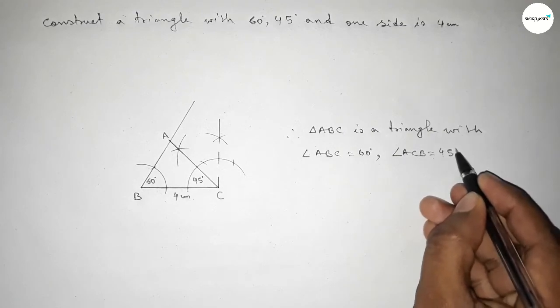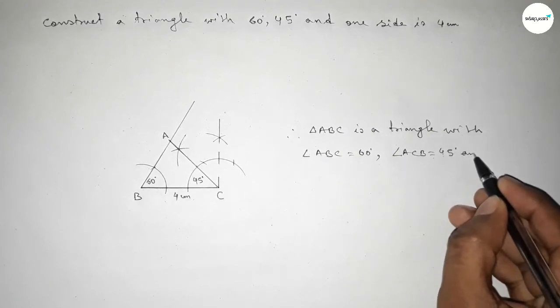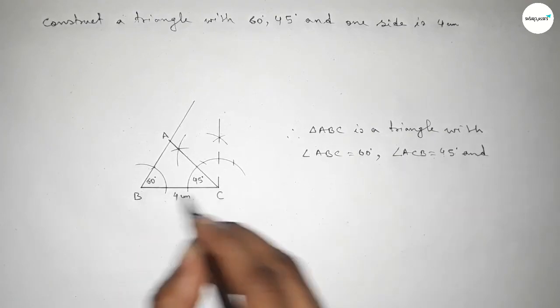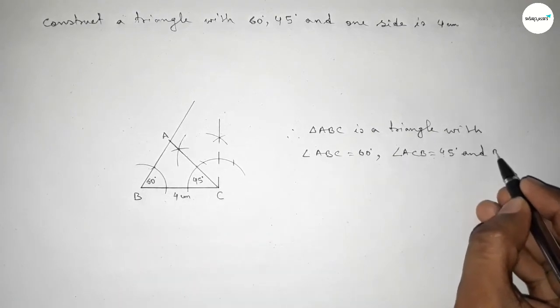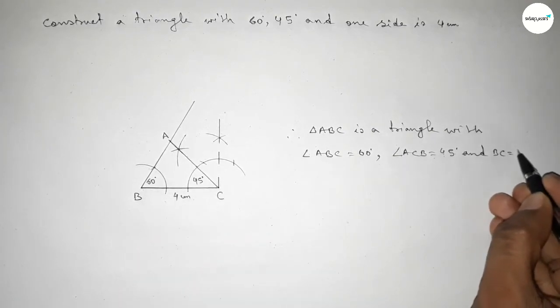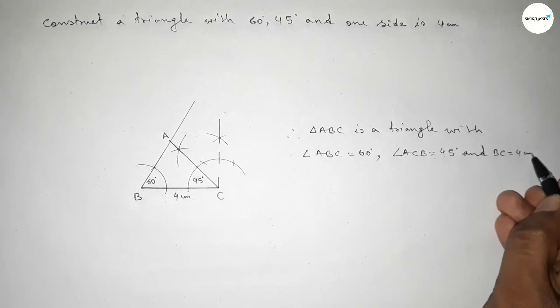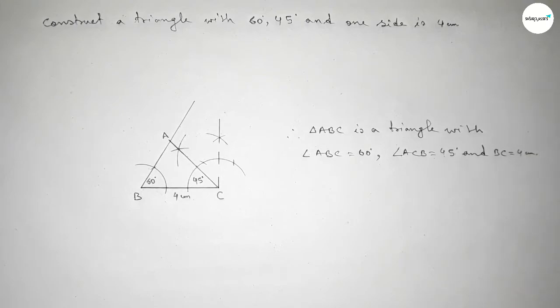And one given side BC equals 4 centimeters. That's all — thanks for watching. If this video is helpful to you, please share it with your friends.